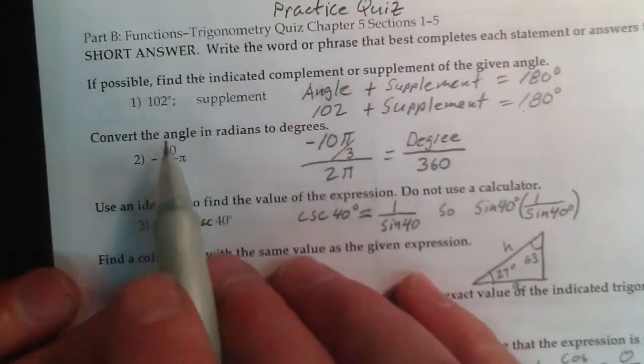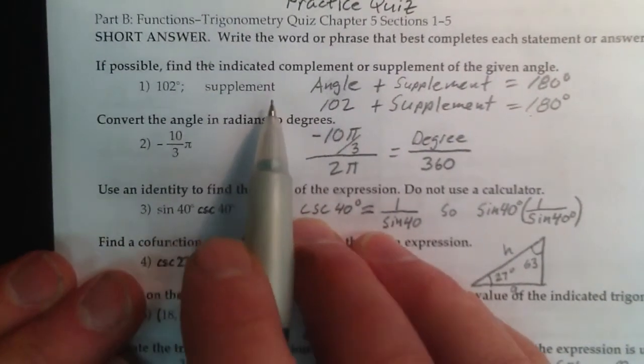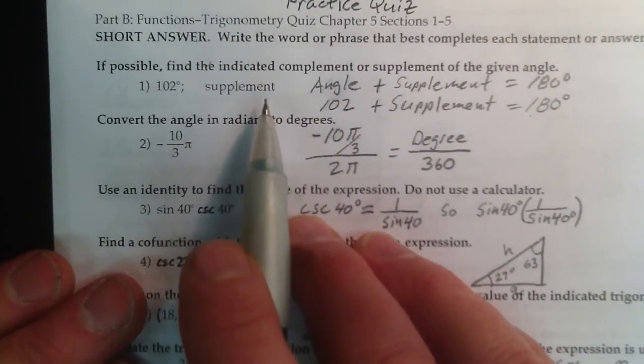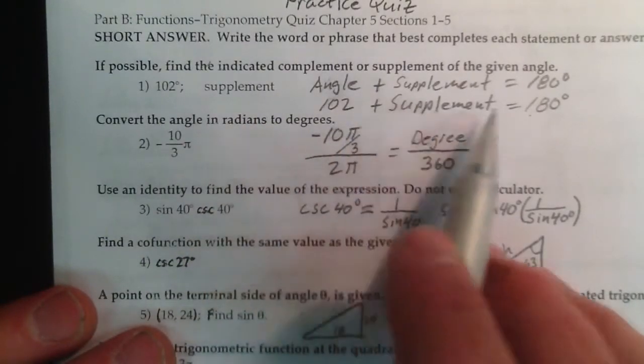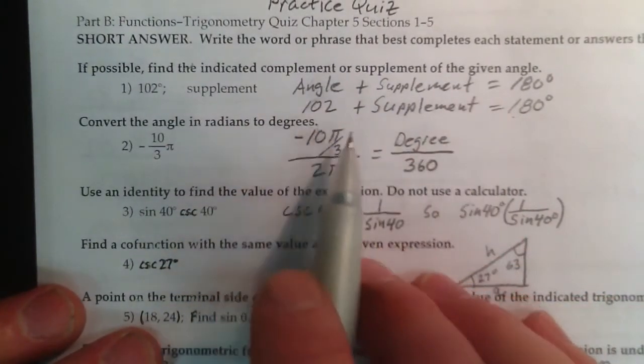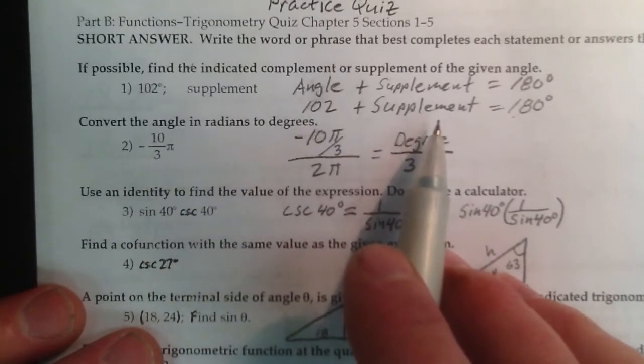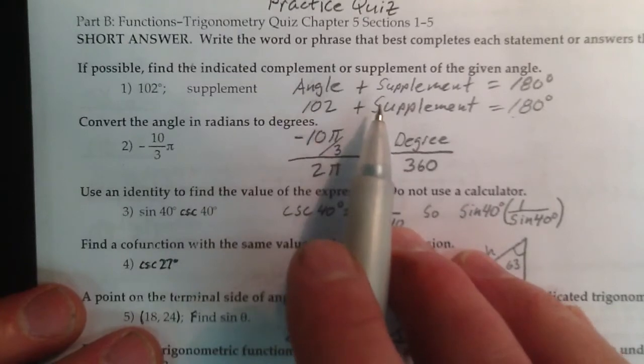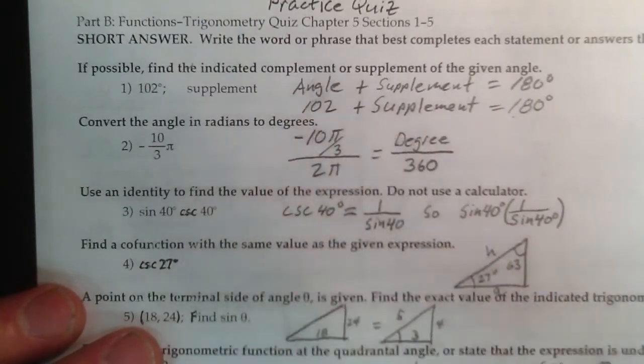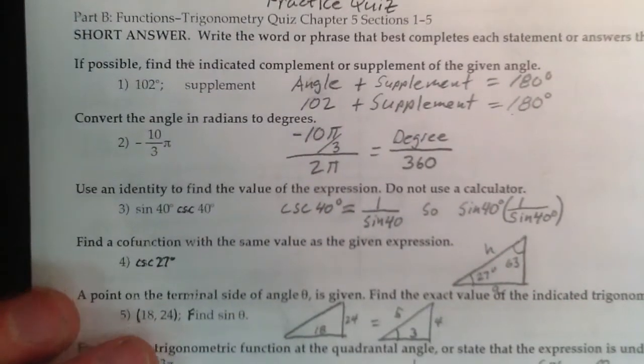Problem number one, supplement and complement. All right, you probably learned that in third grade or Sesame Street. Supplement is two angles equal 180, complement is two angles equaling 90. My bad.